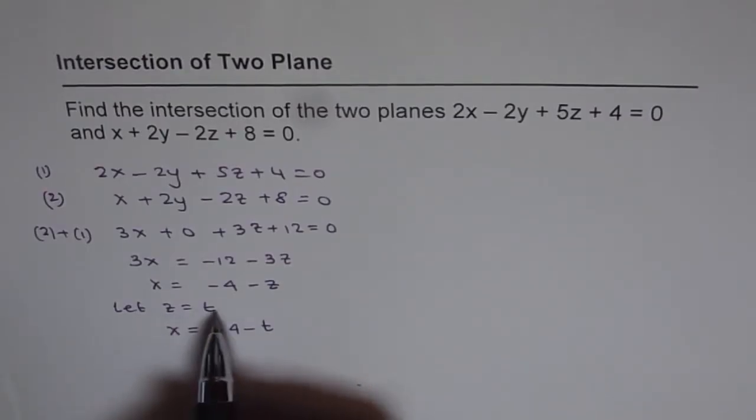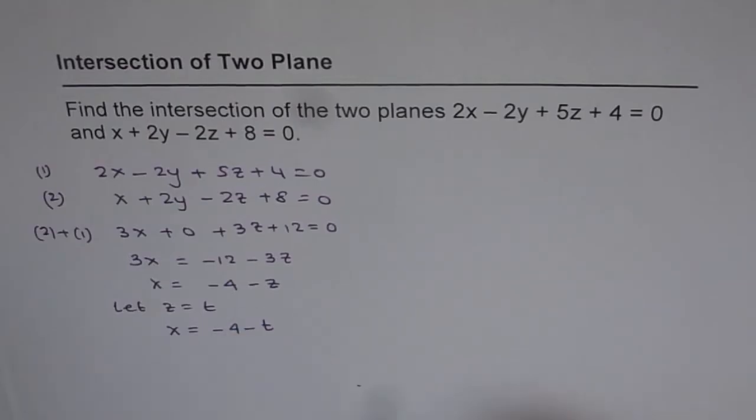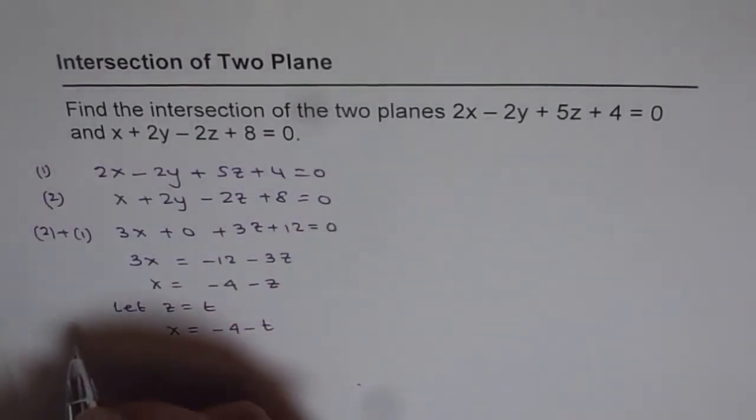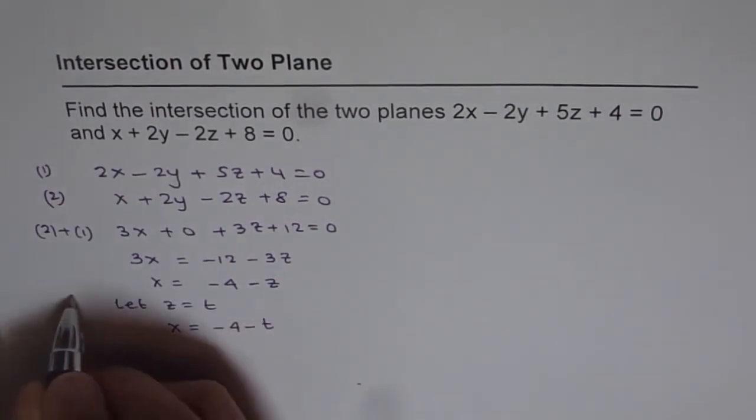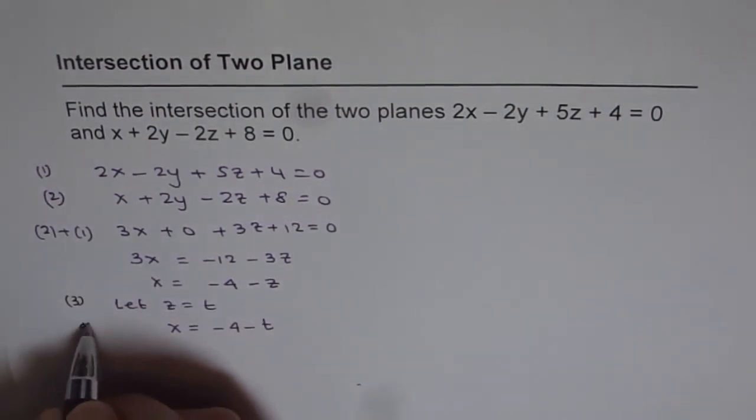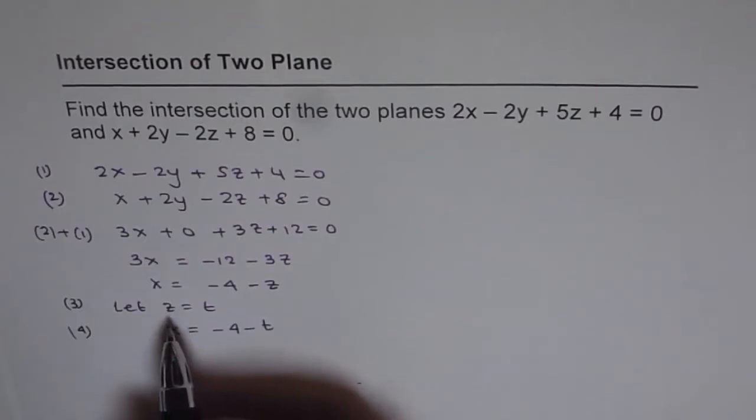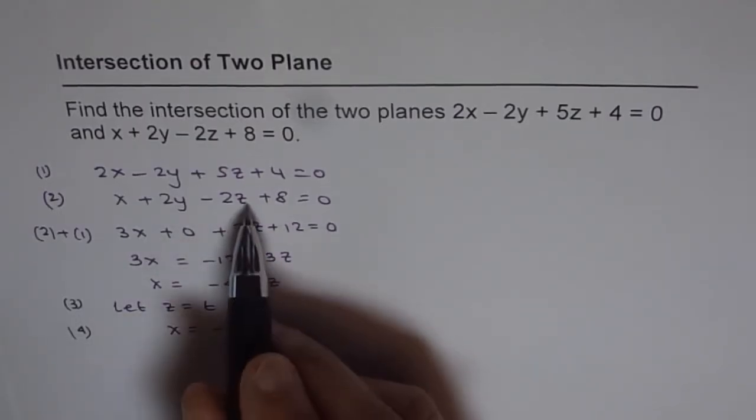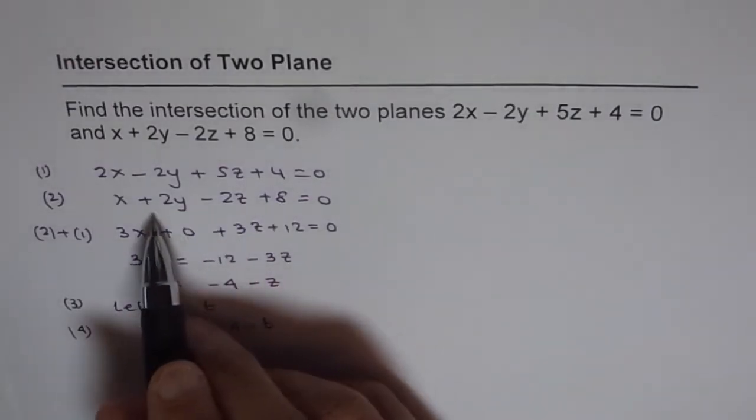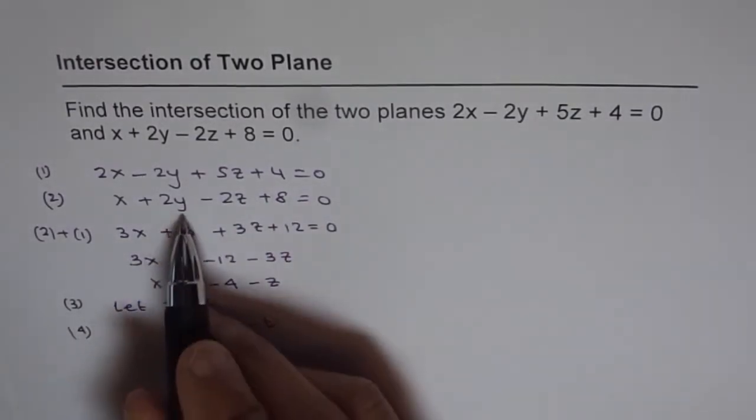Now we know z = t and x = -4 - t. We will substitute these values into equation 2 to solve for y.